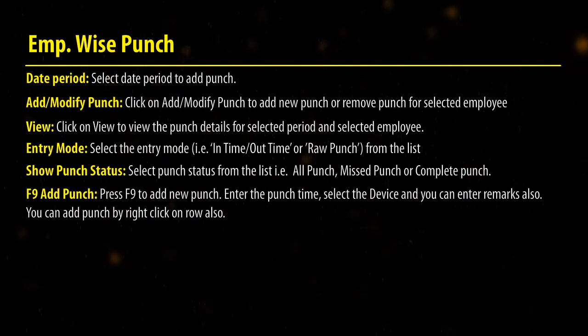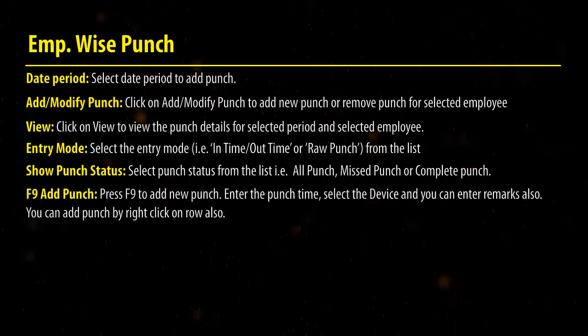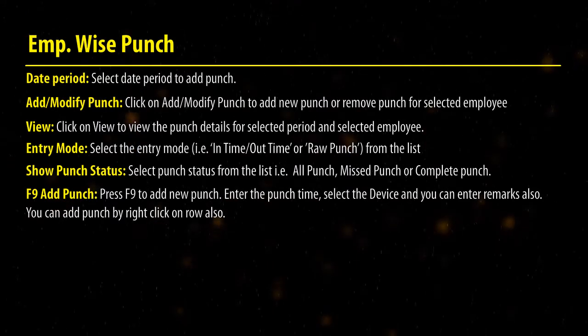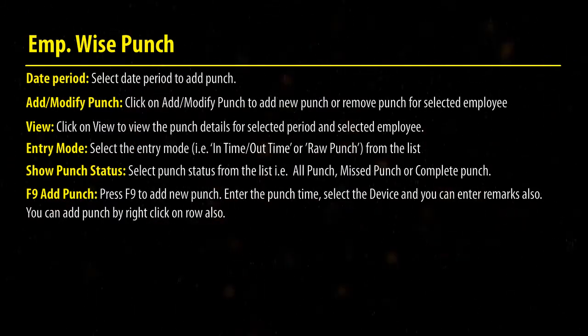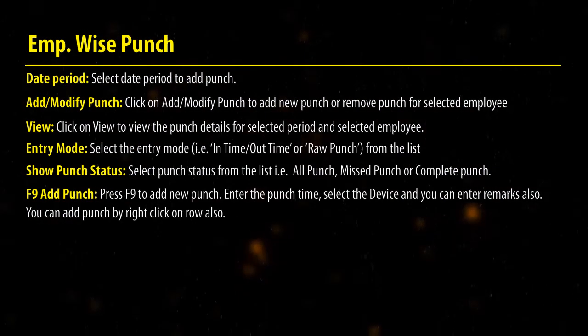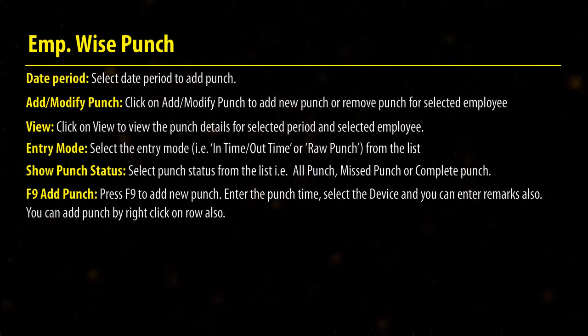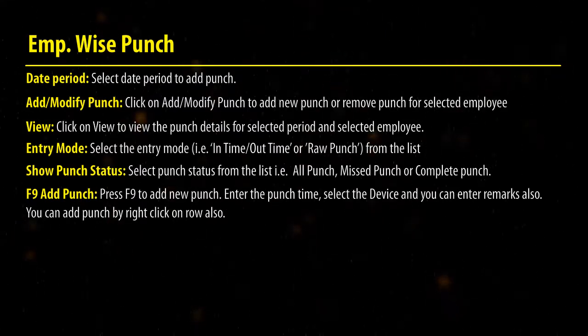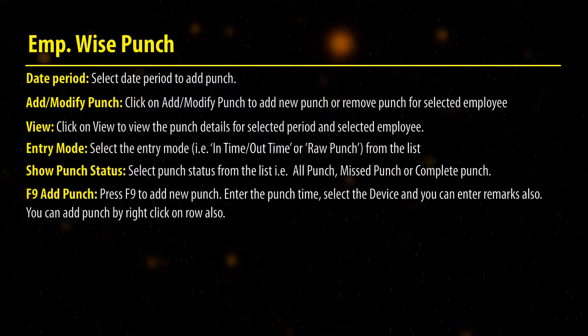Press F9 to add a new punch. Enter the punch time, select the device, and you can enter remarks as well. You can also add a punch by right-clicking on the row.